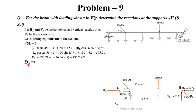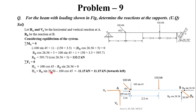Applying Sigma Fx = 0: HA plus 100 cos 45 minus RB sin 26.56 = 0. The 100 cos 45 acts to the right (positive) and RB sin 26.56 acts to the left (negative). Substituting RB = 133.2 kN, we get HA = RB sin 26.56 − 100 cos 45 = −11.15 kN. The negative sign means the actual direction of HA is opposite to assumed — that is, 11.15 kN towards the left.